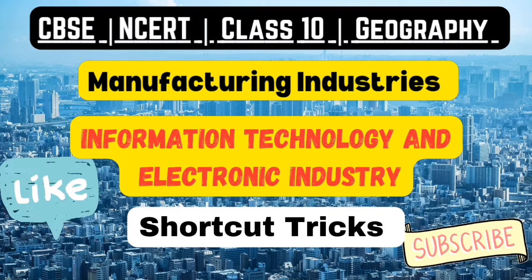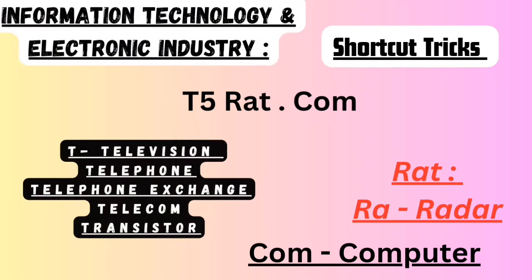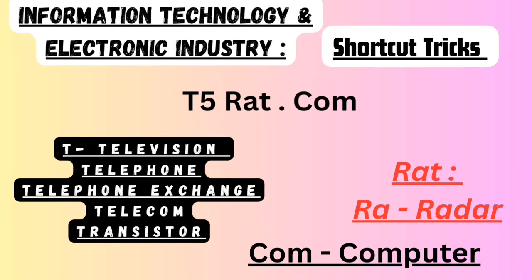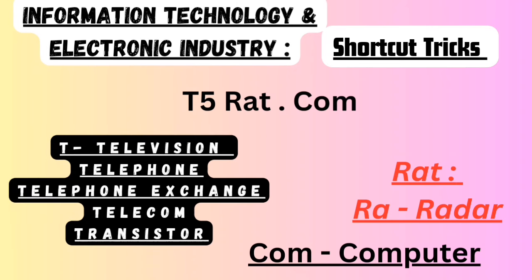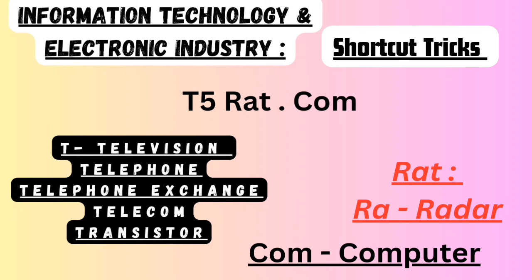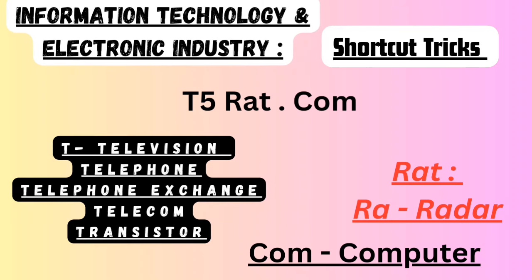The first mnemonic is T5RAT.COM. Here T comes 5 times: T refers to television, telephone, telephone exchange, telecom, and transistor. RAT — R-A refers to radar, and COM refers to computer. These are the products that come under electronic industries.